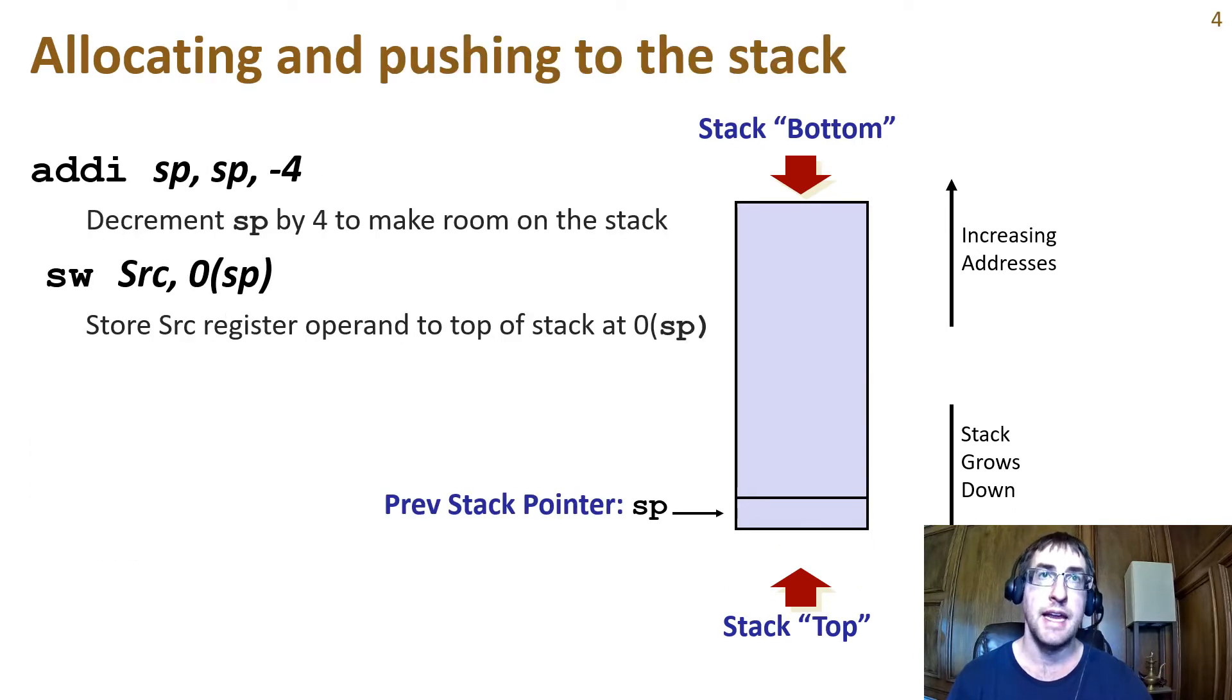The main way to add elements to the stack in RISC-V is the store word instruction. First, we need to make room on the stack to store the data. Addi decrements the stack pointer by x bytes, usually a multiple of 4, to make room for x divided by 4 32-bit words.